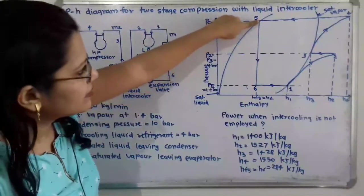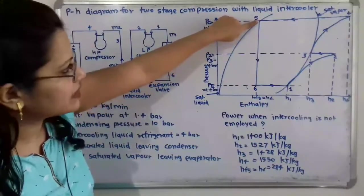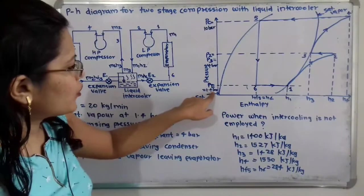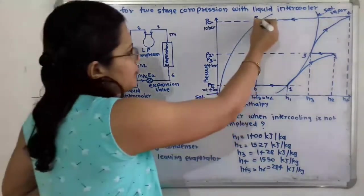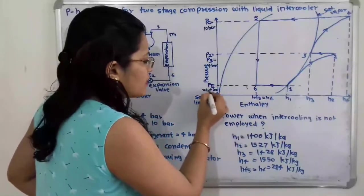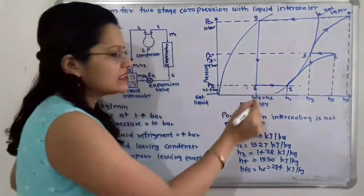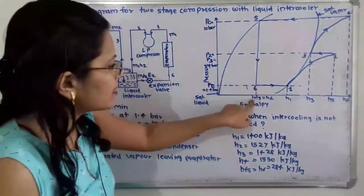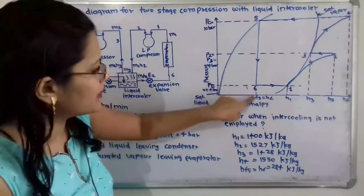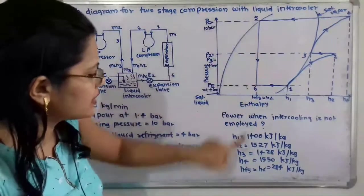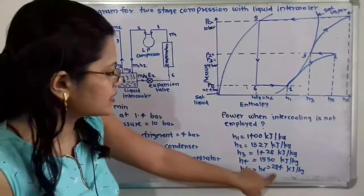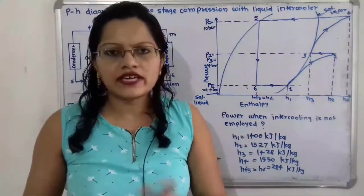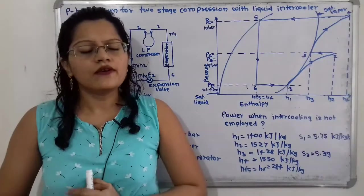The expansion (throttling) process takes place at constant enthalpy. Point 6 is at the 1.4 bar pressure line, found by drawing a vertical line from point 5. The intersection of these two lines gives point 6. Therefore hf5 equals h6, and from the chart, hf5 = h6 = 284 kJ/kg for the ammonia refrigerant.